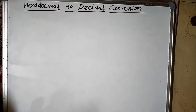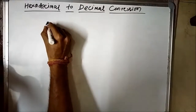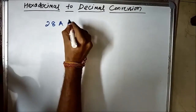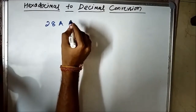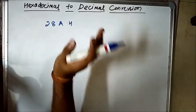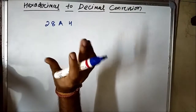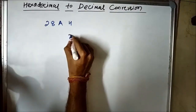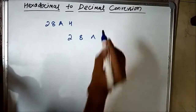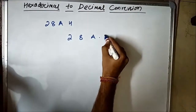Let us consider a hexadecimal number: 28Ah, where H stands for hexadecimal, meaning the given number is in hexadecimal form. Now, the hexadecimal point is here — just to the right of the last digit.